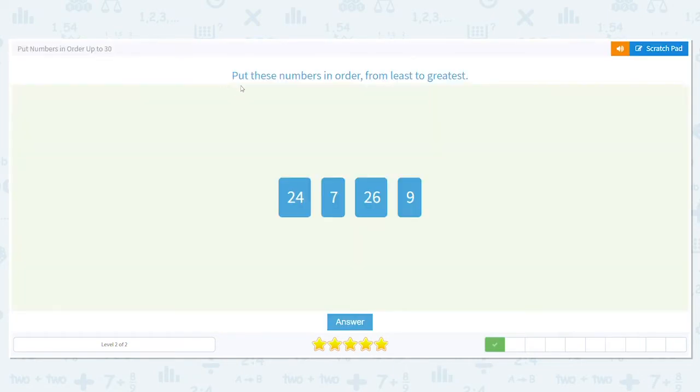Put these numbers in order also from least to greatest. Okay, we have 24, 7, 26, and 9. So which one of those, think of age, is going to be the youngest? A seven-year-old would be the youngest.